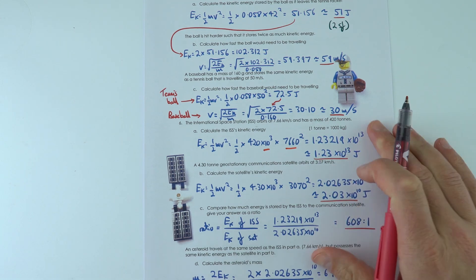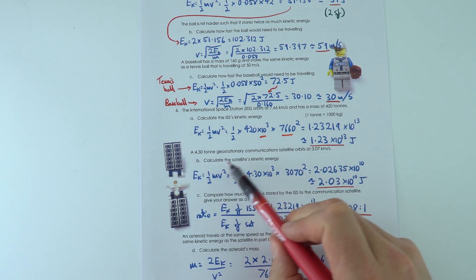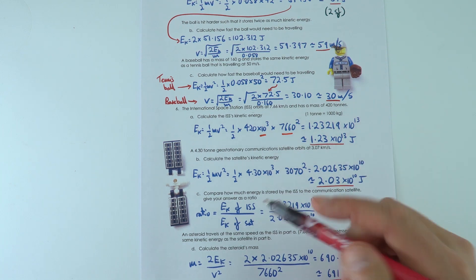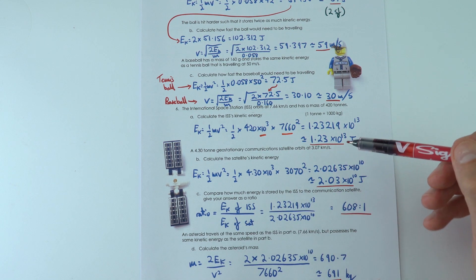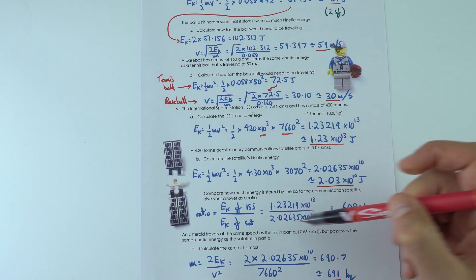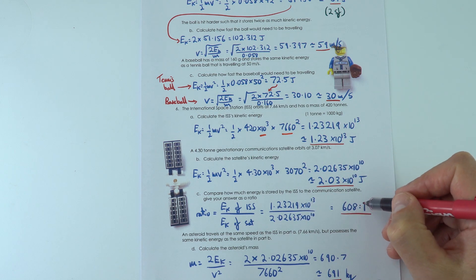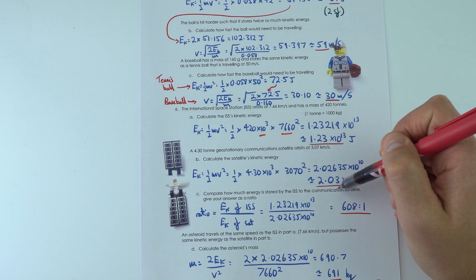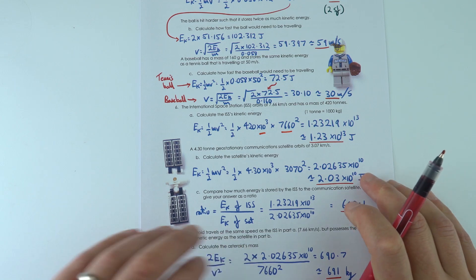And then I did the same kind of thing for the geostationary satellite, so 10 to the 10 joules. And then this one here is about a ratio, so all I did was I looked at this value compared to this value, which gives the ratio of 608 to 1. That means this number is 608 times bigger than this number.